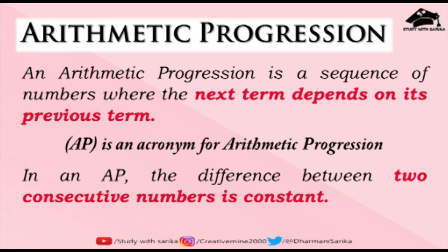Arithmetic progression is a sequence of numbers where the next term depends on the previous term. What is special about this progression? The important thing is that this series or sequence of numbers has a constant difference — if we have numbers written in a sequence and subtract two consecutive numbers, we get a fixed number, and that fixed number will remain the same for the entire sequence.